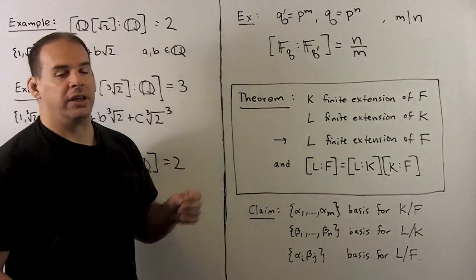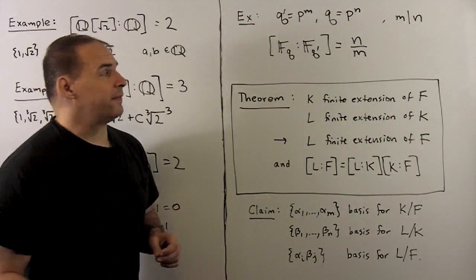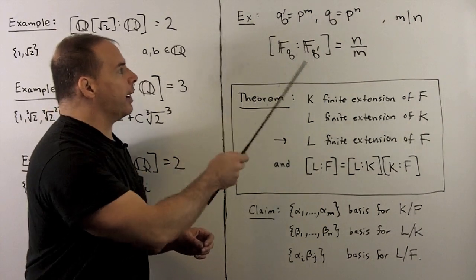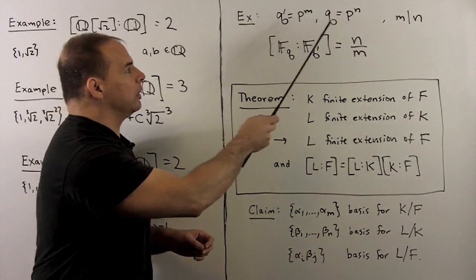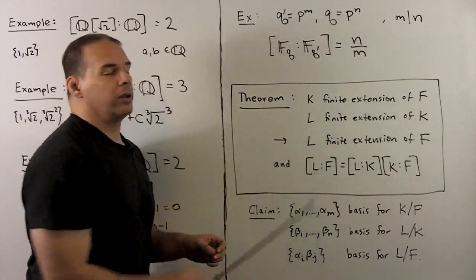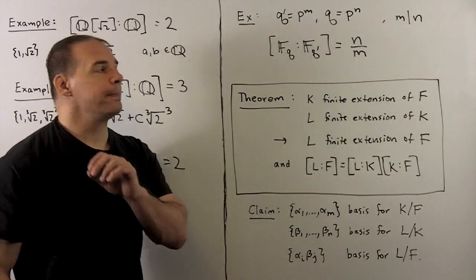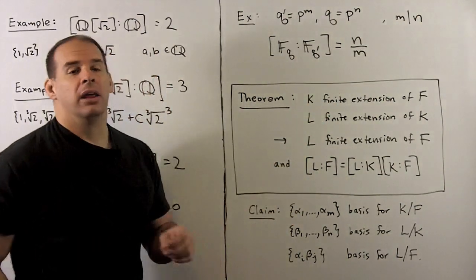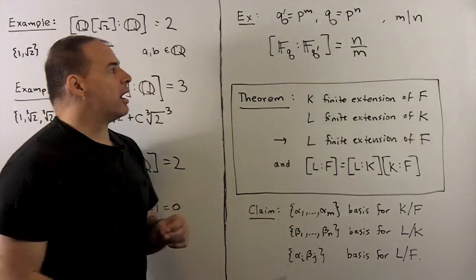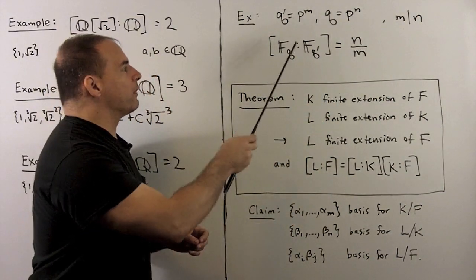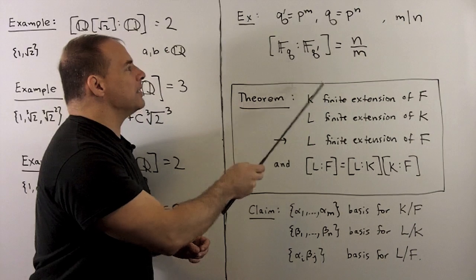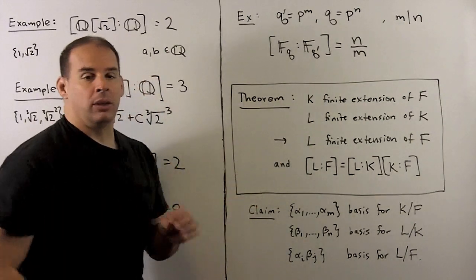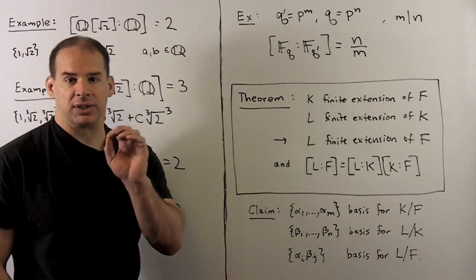For finite fields, if Q′ = P^M and Q = P^N with P prime and M dividing N, then the degree of F_Q over F_{Q′} is equal to N/M. We get that by counting.